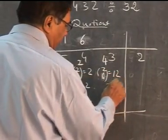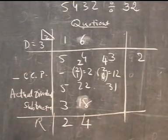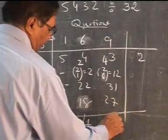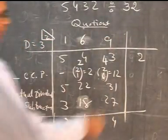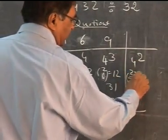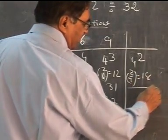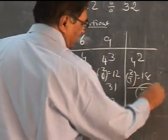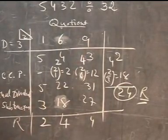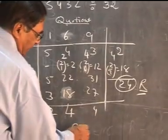We divide 31 by 3 - the maximum quotient will be 9. So we put 9: 9 times 3 is 27, remainder is 4. We put 4 here. Then 2 times 9 is 18 to be subtracted. So 4 and 24: this is the remainder. The quotient Q is 169 and the remainder is 24. You can cross-check using normal multiplication and adding the remainder.